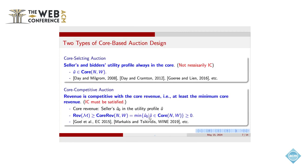So in literature, there are two lines about the core related auction design. One line is about core selecting auction. In this line, researchers have proved that the IC is not necessarily satisfied. So most research in this line give up the truthfulness and design auctions for other properties. But we are focusing on the second line. This line is called core competitive auction.